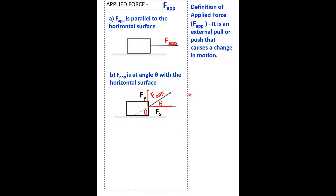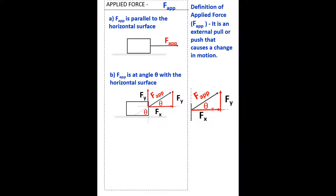I'm going to temporarily move this arrow to this end of this triangle right here. Now we have F-Y. So, now we have F-app as the hypotenuse. F-Y is the opposite for this angle, and F-X is the adjacent for this angle.